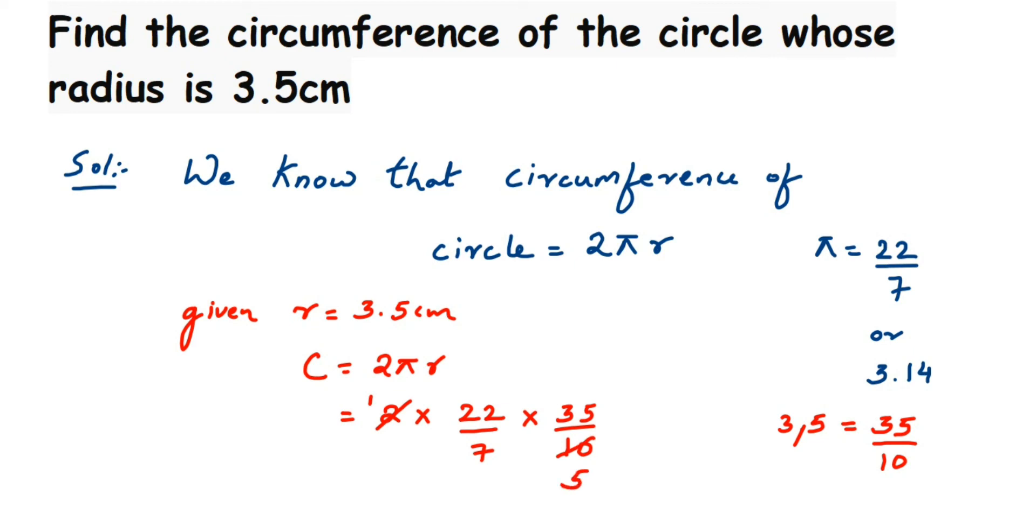Again, 35 and 5 I can cancel: 5 times 7 equals 35. Now we have 7 in both numerator and denominator—cancel it. We are left with only 22 in the numerator. The answer is 22 centimeters. So circumference of a circle with radius 3.5 cm is 22 centimeters.